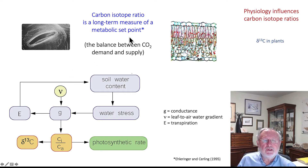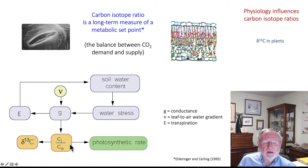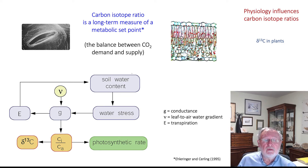The carbon isotope ratio of a C3 plant can be viewed as a metabolic setpoint — basically the balance between CO2 demand and CO2 supply. CO2 is supplied by the stomata; how wide open the stomata are is called the leaf conductance, referred to by the letter G. Photosynthesis is consuming the CO2, so we have a supply function and a demand function. The balance between supply and demand is the intercellular CO2 concentration relative to the ambient CO2 concentration, and the carbon isotope ratio of plants measures that long-term CI/CA ratio.